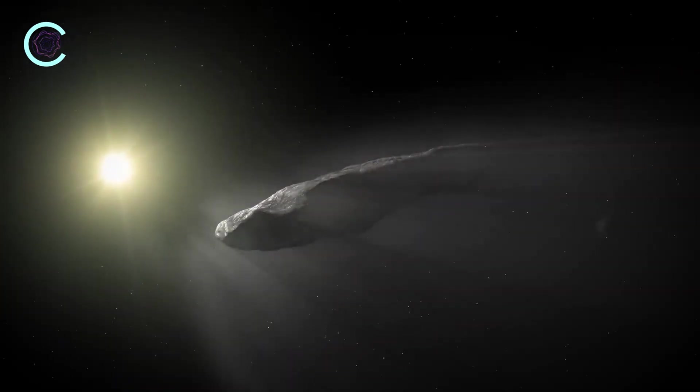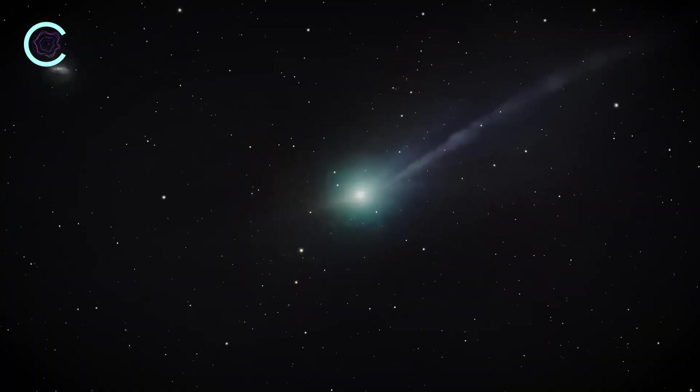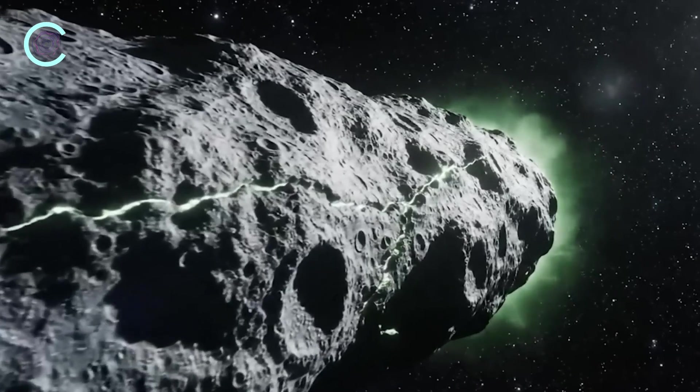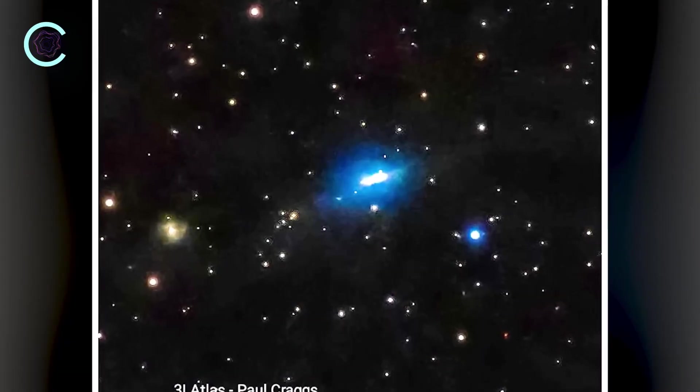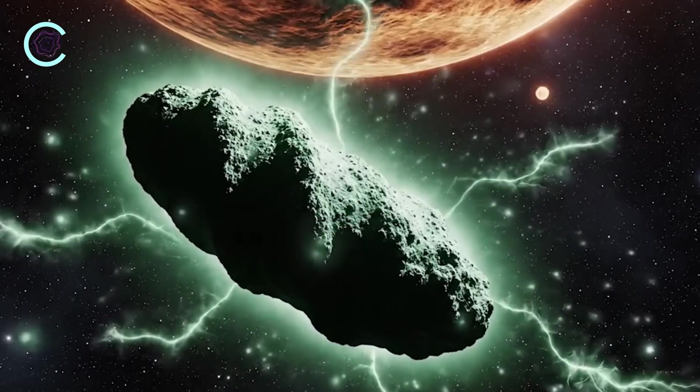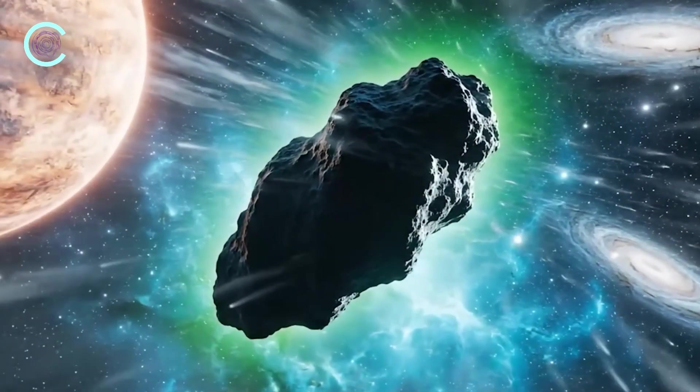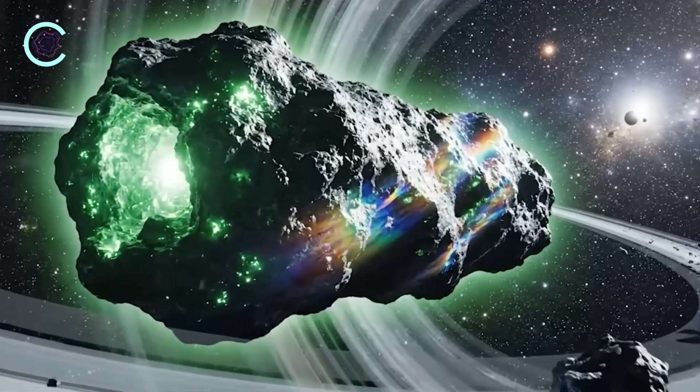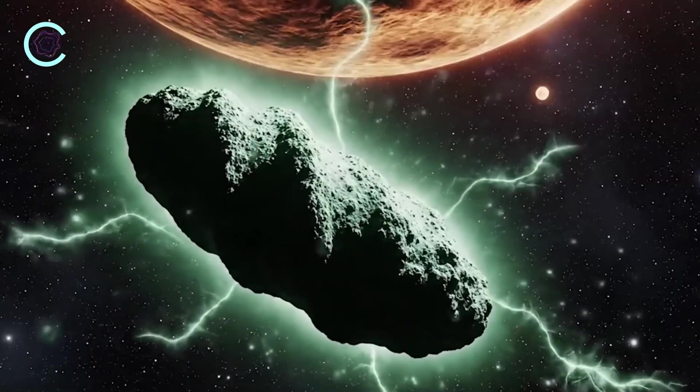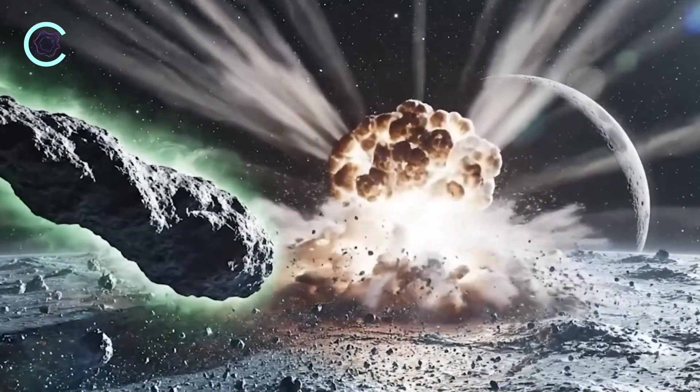Now, green comets aren't unheard of, but everything about this object makes that color a scientific contradiction. According to what we know, 3I Atlas should not be green, not even a little. To understand why, we have to talk about comet chemistry for a moment. Typical comets turn green when ultraviolet radiation from the sun hits molecules of diatomic carbon, C2. When C2 gets excited by sunlight, it fluoresces bright green. This is a routine, well-understood chemical process. We've seen it countless times.